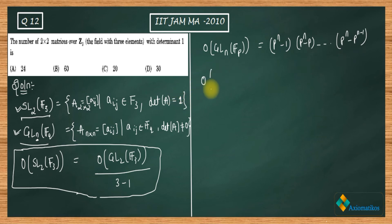Finally, what you have proved is order of SL₂(F₃). What is your prime number? It's 3, right? 3² minus 1, 3² minus 3 over 3 minus 1.